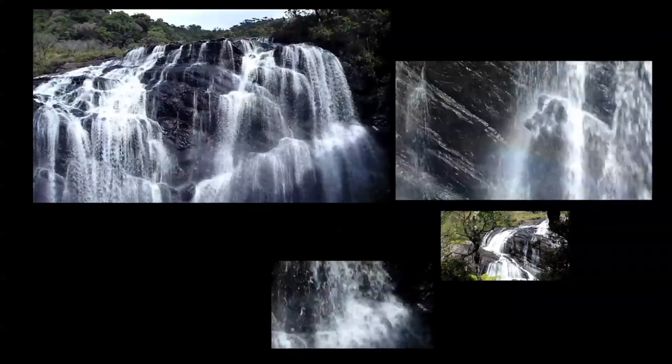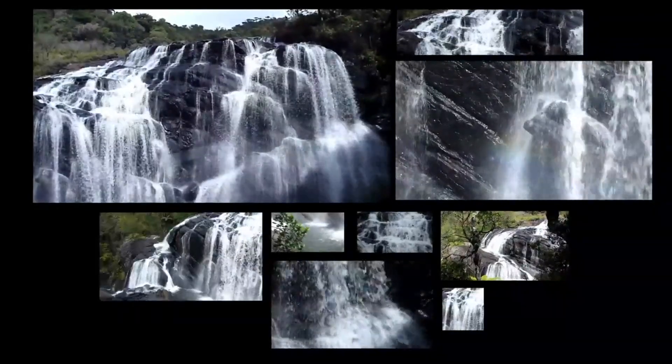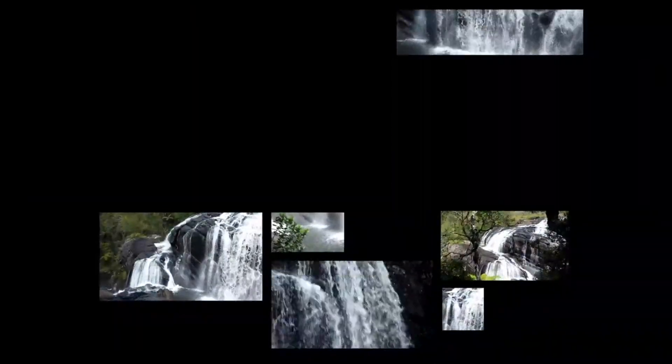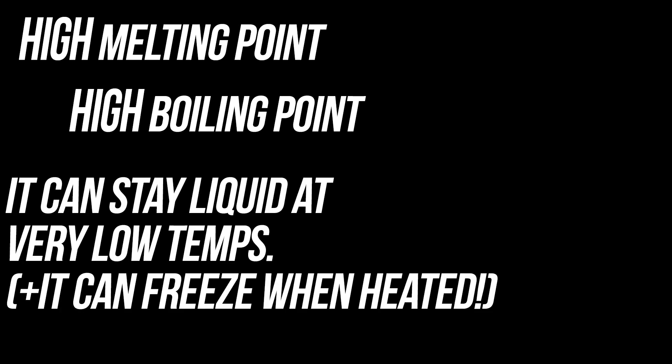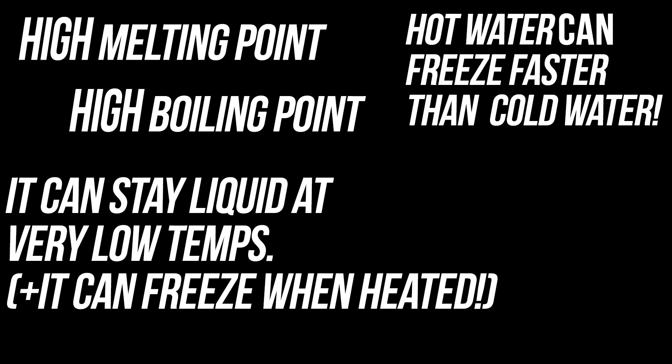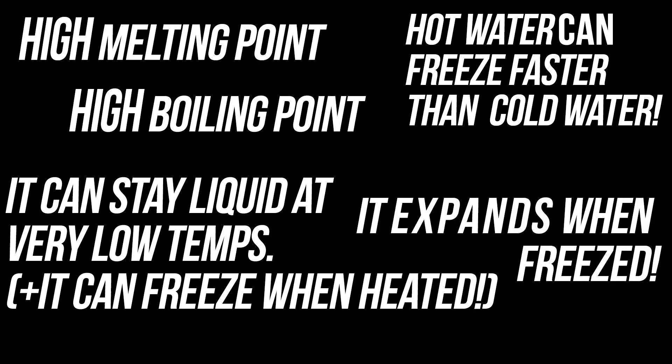Because water is the most abundant liquid on Earth, we find its properties completely normal, but compared to other liquids, water is nowhere near normal. Water has an unusually high melting point. It also has an unusually high boiling point. Liquid water can exist at very low temperatures, and it can freeze on heating. Hot water may freeze faster than cold water. Water shrinks on melting and expands on freezing. Water is weird.